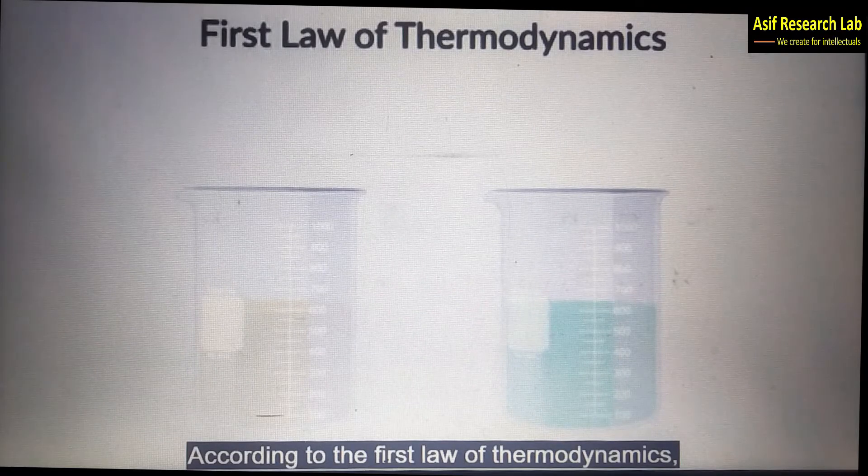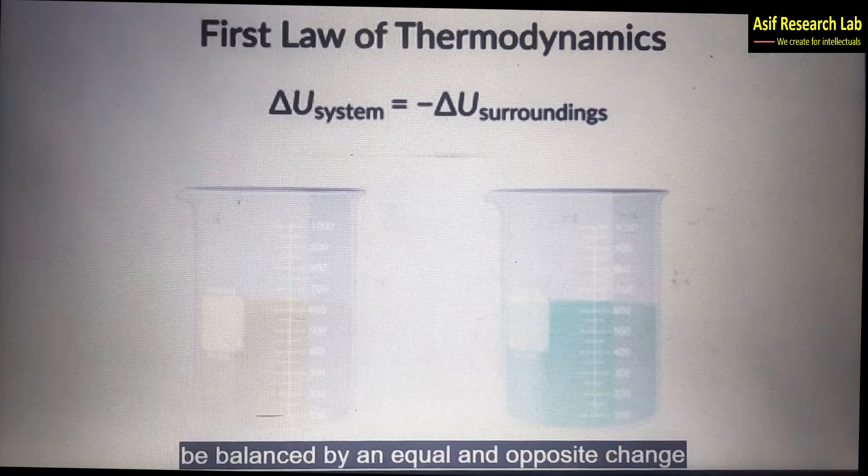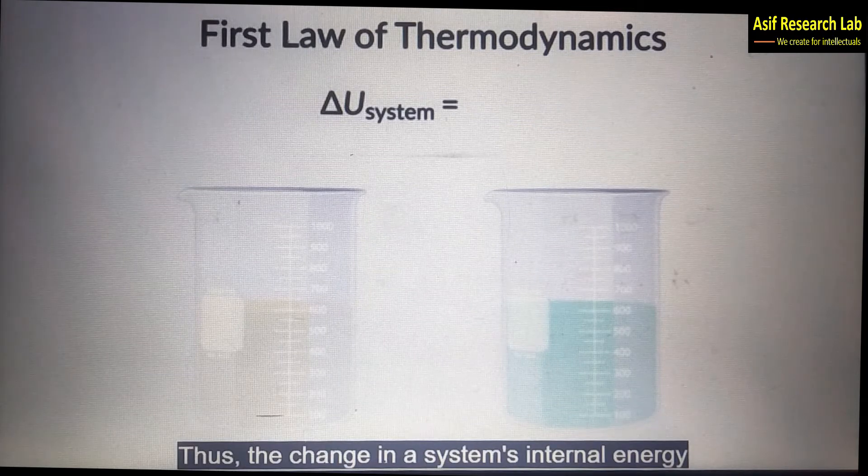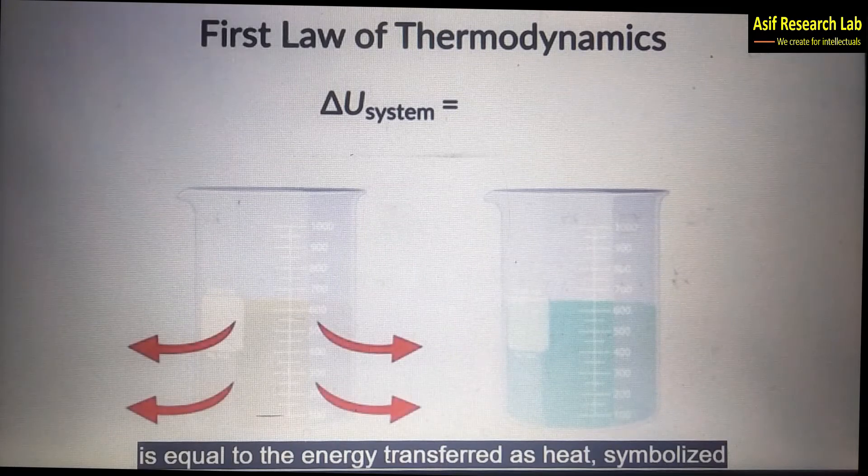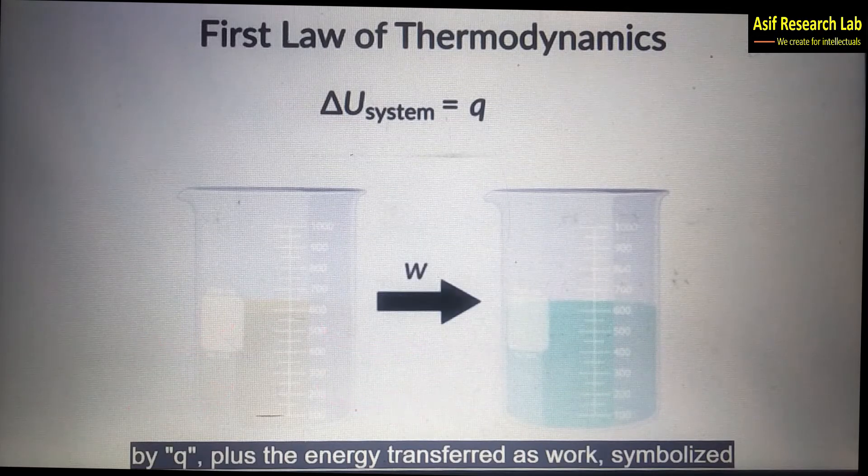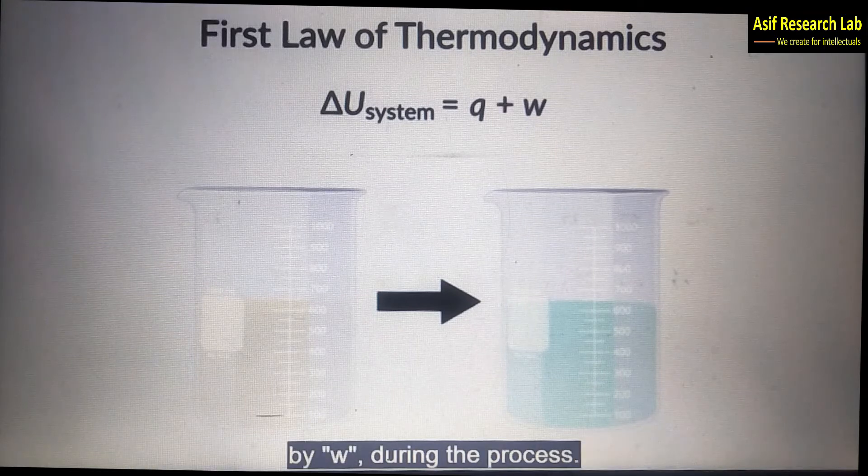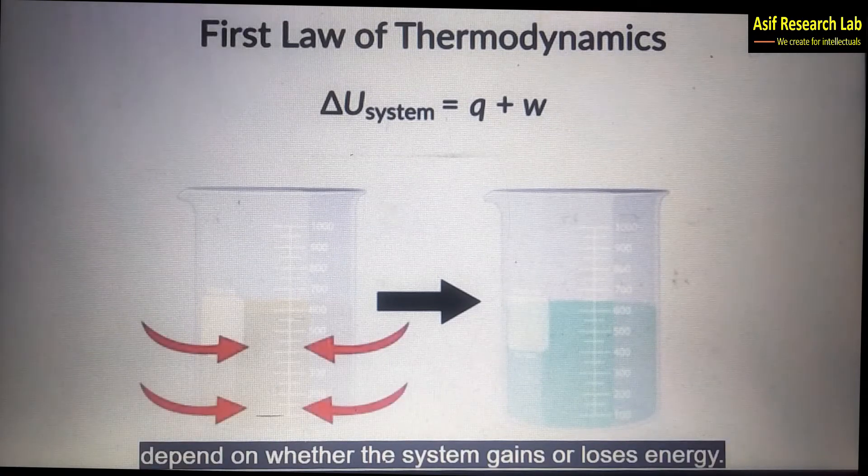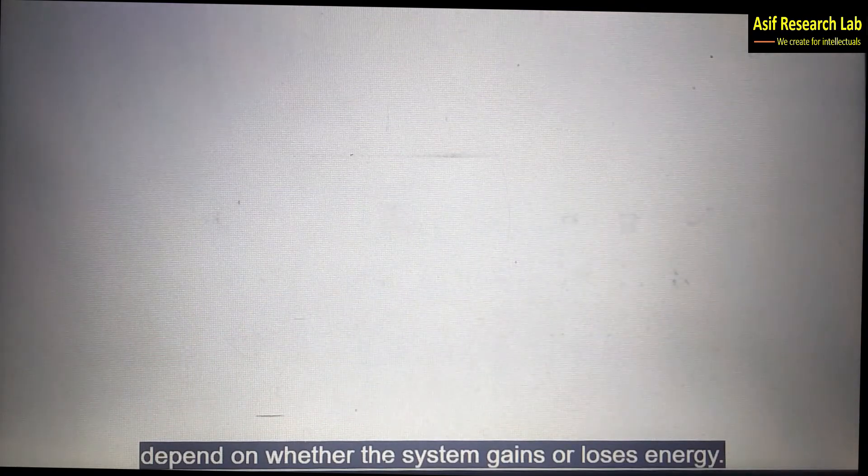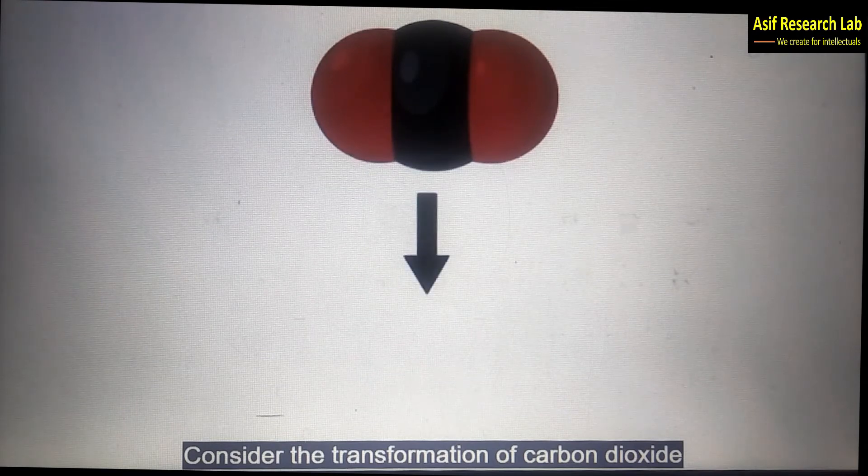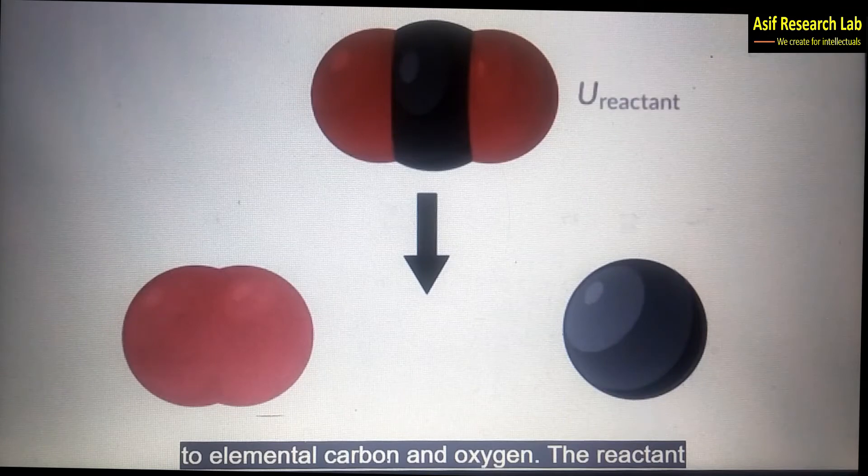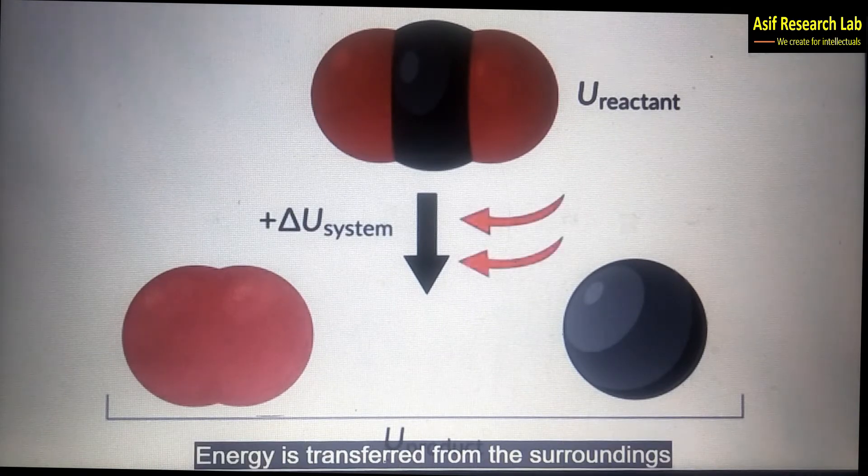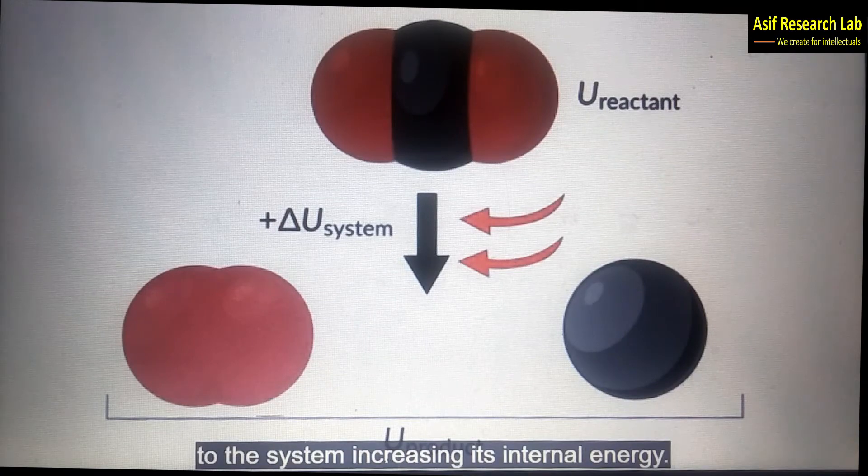According to first law of thermodynamics any change in system's energy must be balanced by an equal and opposite change in its surroundings. Thus the change in system internal energy is equal to the change transformed as heat symbolized by q plus the energy transferred as work symbolized by w during the process. In chemistry the sign for heat and work depends on whether system gains or loses energy. We consider the transformation of carbon dioxide to elemental carbon and oxygen. The reactant has lower internal energy than the product meaning delta U is positive. Energy is transferred from the surroundings to the system increasing its internal energy.